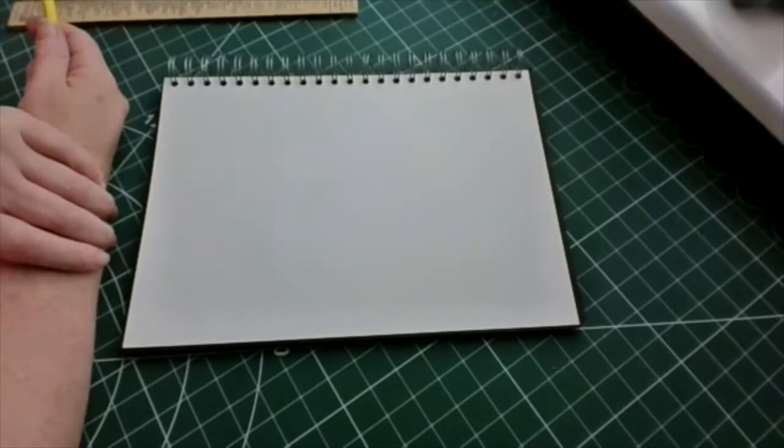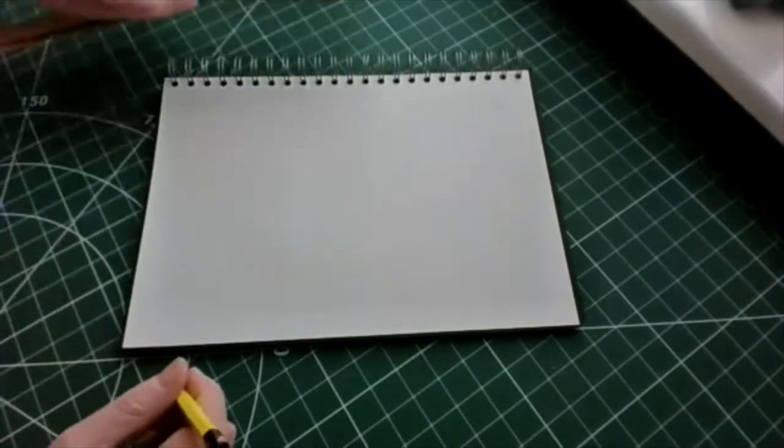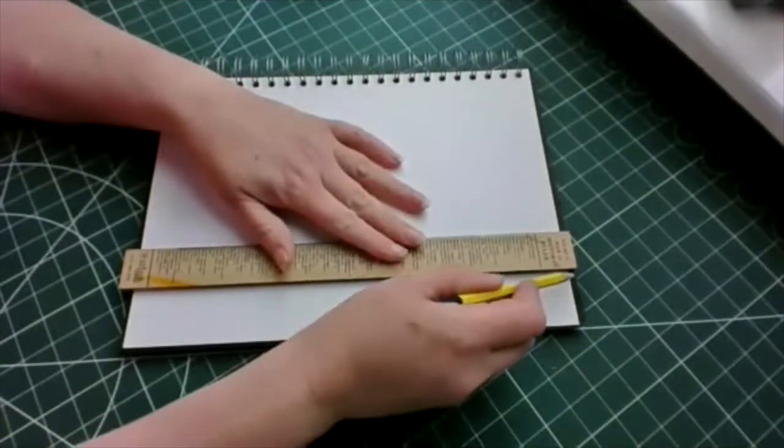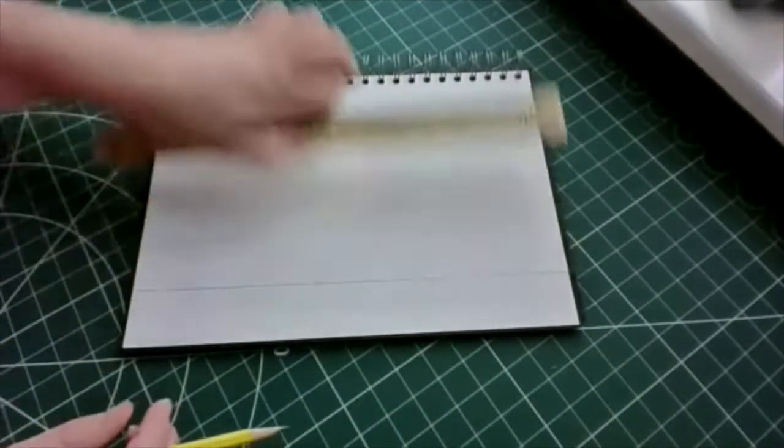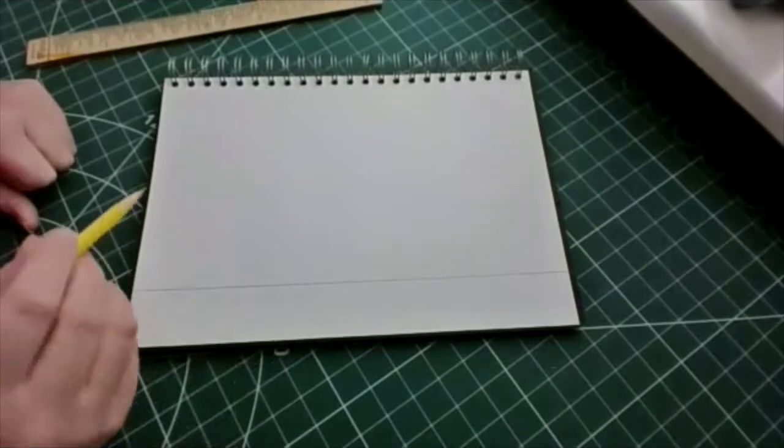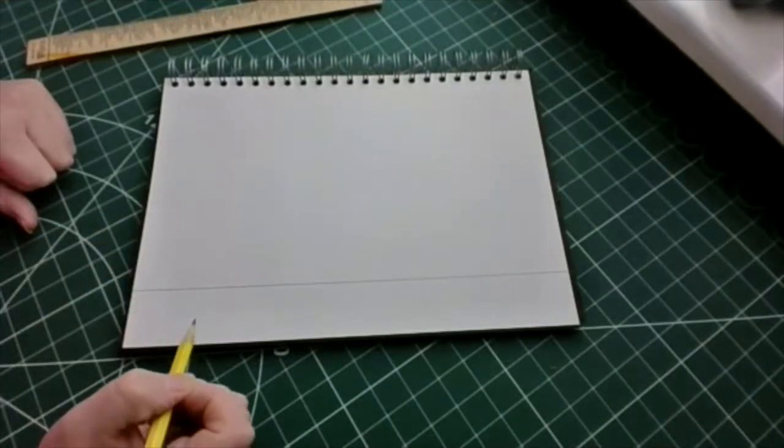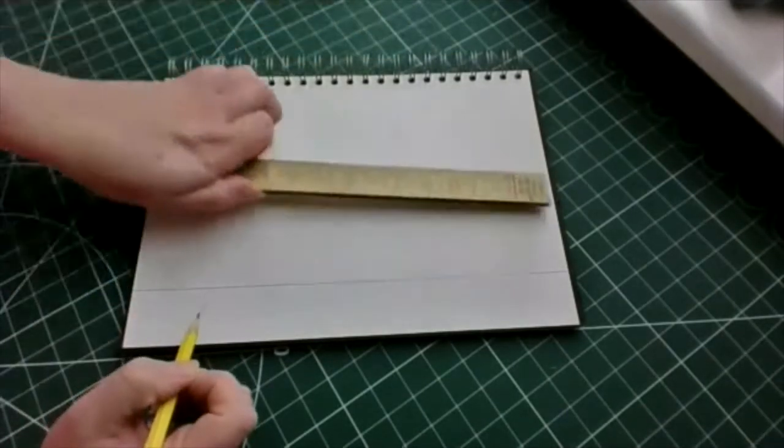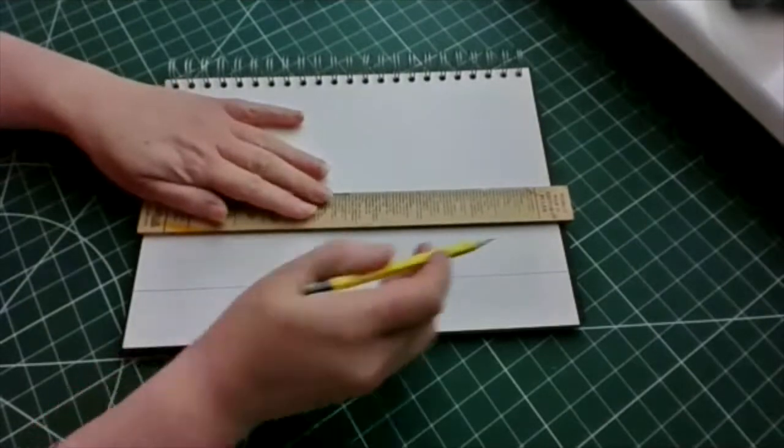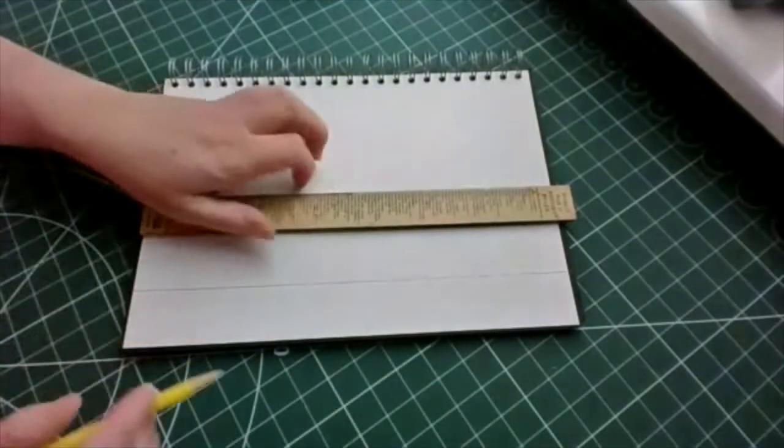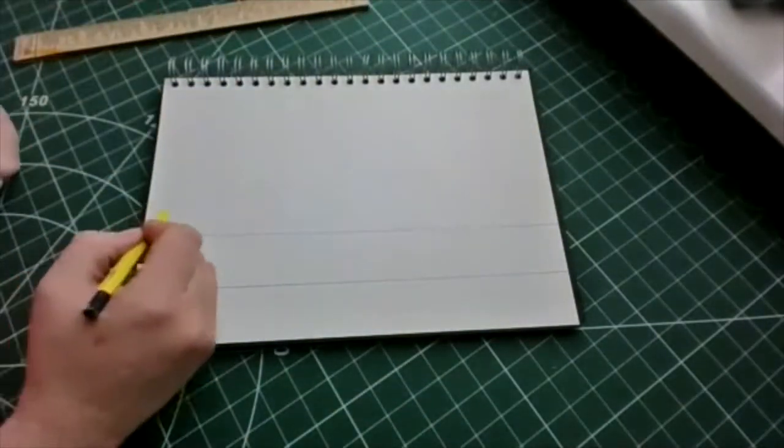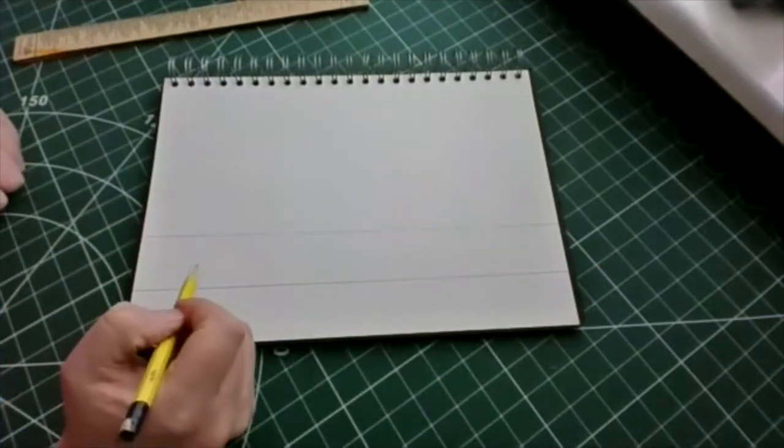So we're going to start off by drawing the sea wall. We need somewhere to start so we'll have a line across there, and then we need the promenade, and then across here we're going to draw the houses.